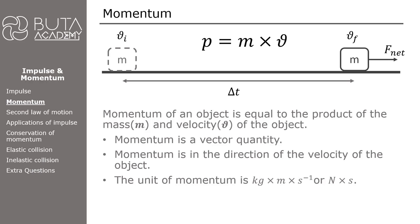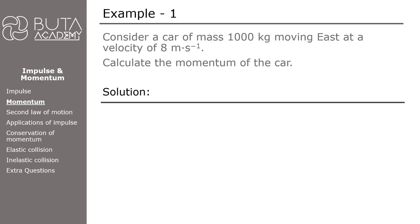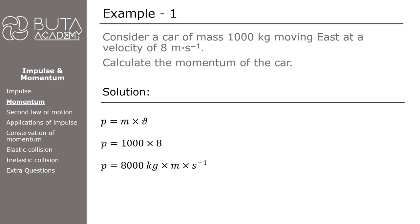Let's look at a couple of simple examples about momentum. In the first example, we are asked to calculate the momentum of a car of mass 1000 kg moving east at a velocity of 8 meters per second. In CAPS exams, these types of questions are generally worth three marks: one for the correct formula, one for correct substitution, and one for the correct answer. Momentum equals mass times velocity, which is 1000 times 8, giving 8000 kilogram meters per second. Since momentum is a vector, we must also specify direction. The object moves east, so the momentum is also directed east.